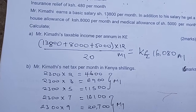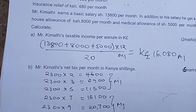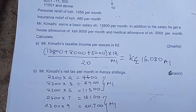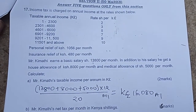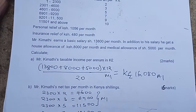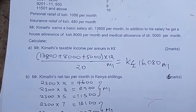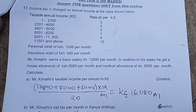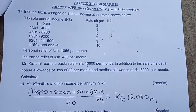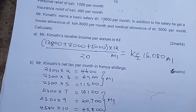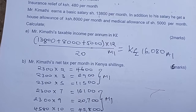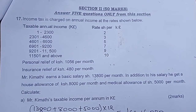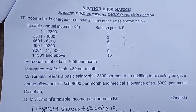In Part B, we are asked to calculate Mr. Kimati's net tax per month in Kenya shillings. The first bracket covers 2,300 Kenya pounds, so we calculate the tax: 2 times 2,300 equals 4,600. In the second bracket, the amount is also 2,300, and the rate is 3 shillings per pound, so we multiply by 3 to get 6,900.